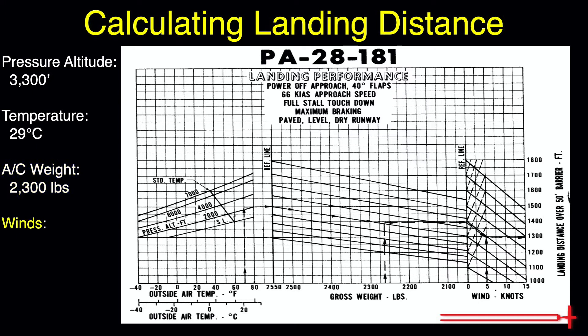Next is winds. We need to find only our headwind or tailwind component. Let's assume that we have a 16-knot headwind component today. If you are unfamiliar with how to find headwind or tailwind components, please check out the video on crosswind component calculations linked in the description below, where I explain how to find headwind and crosswind components with just your calculator and a local METAR.